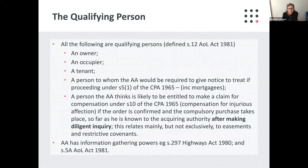All the following are qualifying persons defined by Section 12 of the Acquisition of Land Act 1981: an owner, an occupier, a tenant, and a person to whom the acquiring authority would be required to give notice to treat if proceeding under Section 5.1 of the Compulsory Purchase Act 1965 — so all persons interested in or having a power to sell and convey or release the land. Also a person the acquiring authority thinks is likely to be entitled to make a claim for compensation under Section 10 of the Compulsory Purchase Act 1965 — compensation for injurious affection — if the order is confirmed and the compulsory purchase takes place, so far as known to the acquiring authority after making diligent inquiry.